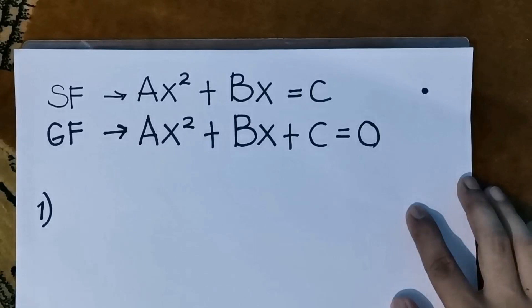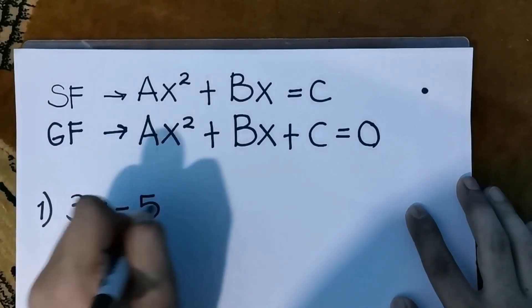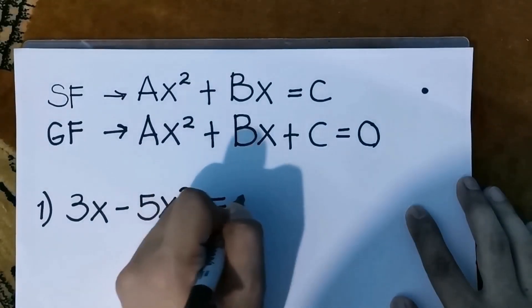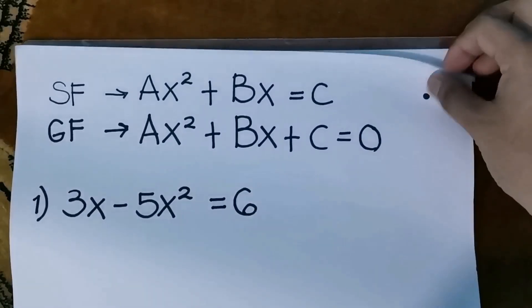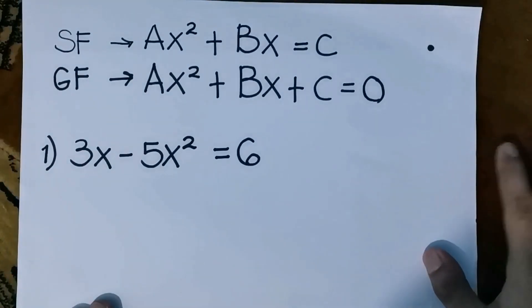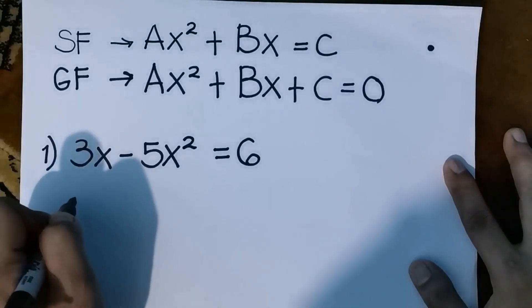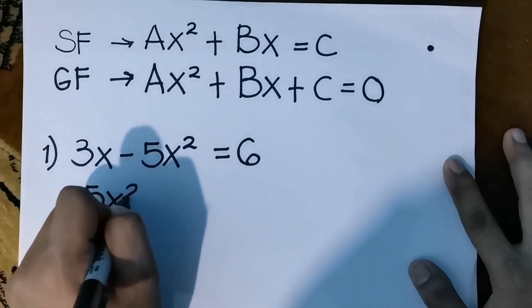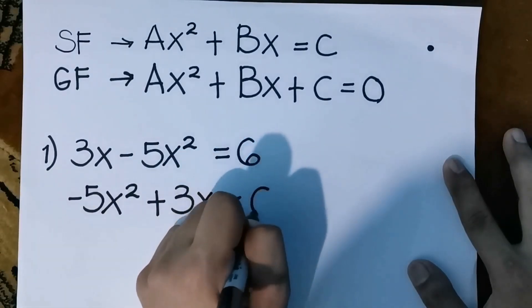Let's have the first example: 3x minus 5x squared equals to 6. Let's start with the standard form. The highest degree is 2, so that term goes first. We can write it as negative 5x squared plus 3x equals to 6.